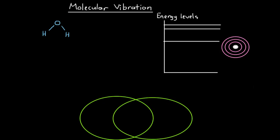Molecular vibrations are all about the covalent bonds that help to form a molecular structure. We've got a sketch of the structure of a water molecule, an H2O molecule. To help us understand molecular vibration, it can be helpful to compare these covalent bonds — pairs of electrons shared by atoms — to a spring. If we view the covalent bonds as springs, we can better picture the ways in which our H2O molecule can change shape or vibrate.